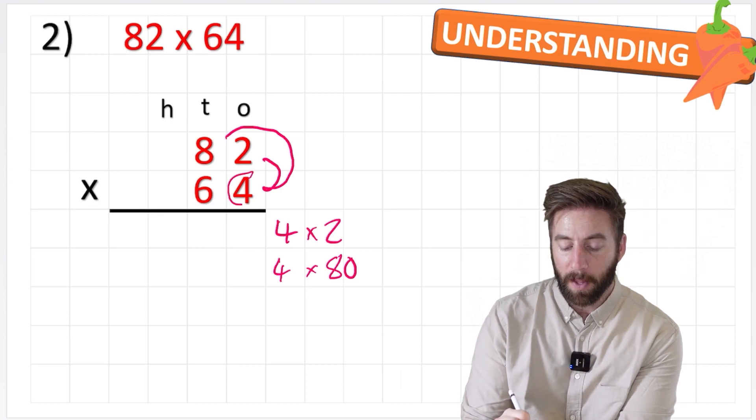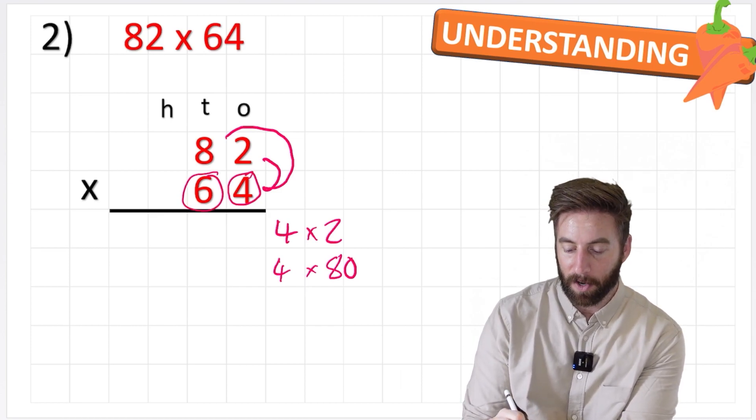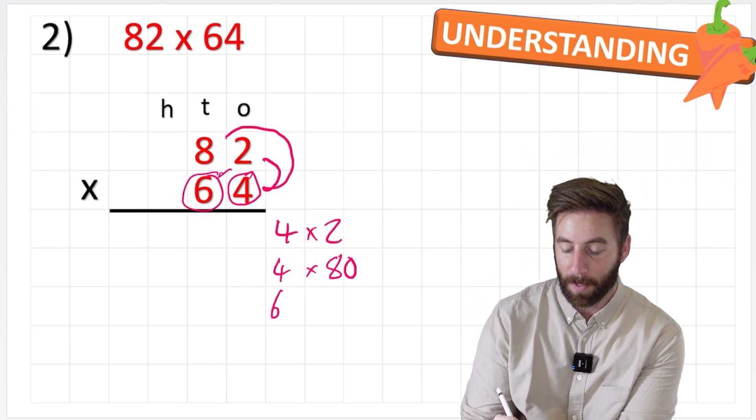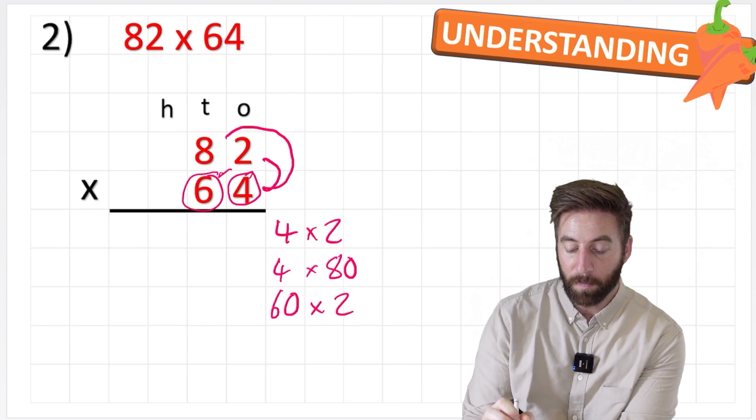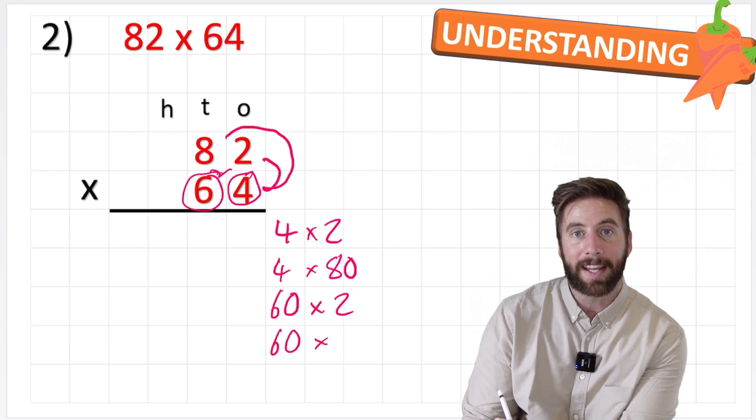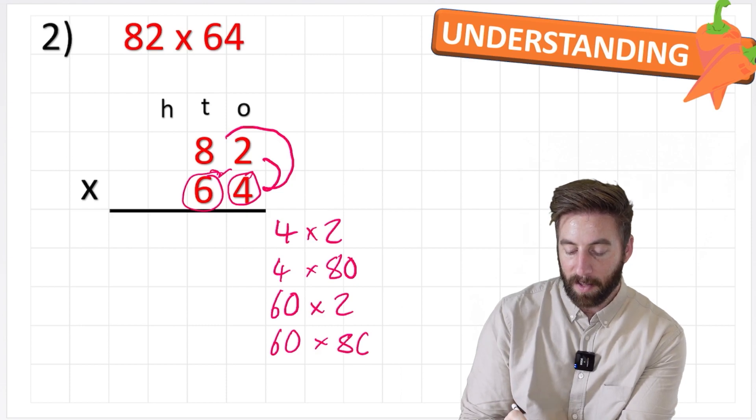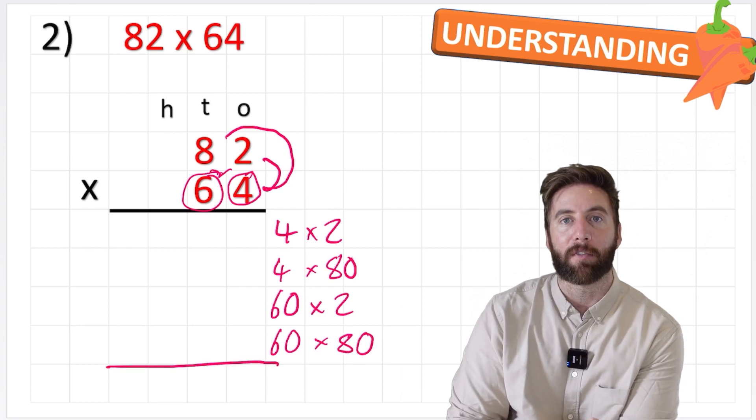So now I've done the 4, I'm going to move on to the 6 and I'm going to do 6 times 2. But we know it's also not a 6 because it's in the 10s column. So it's 60 times 2. And then my last question would be 60 times 80. Put my equals line and I'm ready to begin.